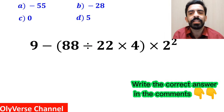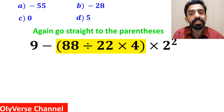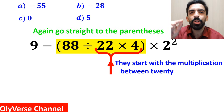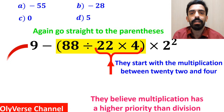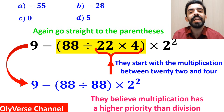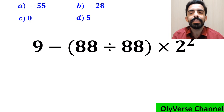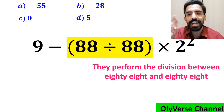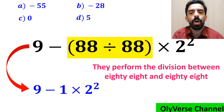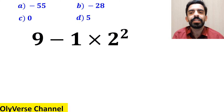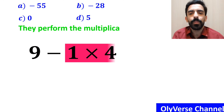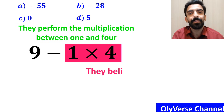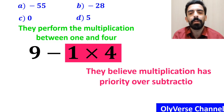Some other people, when solving this question, again go straight to the parenthesis. But this time they start with the multiplication between 22 and 4, because they believe multiplication has a higher priority than division. So they rewrite the expression as 9 minus (88 divided by 88) multiplied by 2 squared. They then perform the division between 88 and 88 and simplify to 9 minus 1 multiplied by 2 squared. Next, they go to the exponent and simplify to 9 minus 1 multiplied by 4, then perform the multiplication between 1 and 4 because they believe multiplication has priority over subtraction.